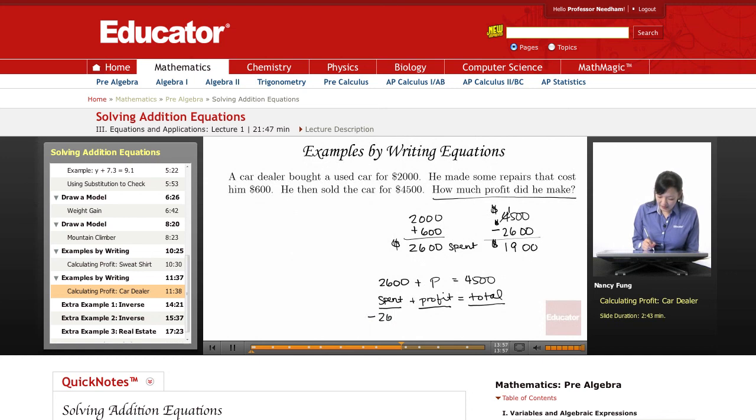So we have $2,600 plus P equals $4,500. Let's take out how much money he's spending, and that will leave us with the profit. $2,600 minus $2,600 cancels out to zero. We're left with just finding out about his profit. P equals zero, zero, borrow here, nine, and three minus two is one. So his profit equals $1,900.